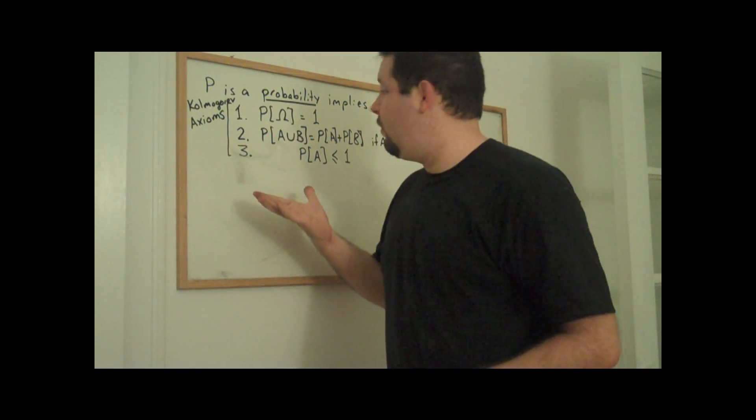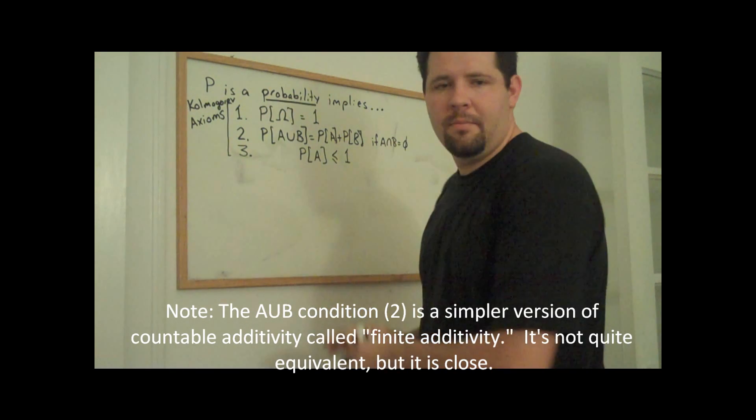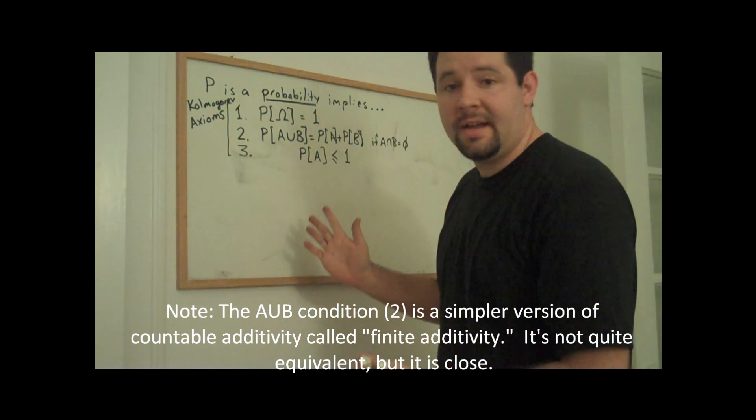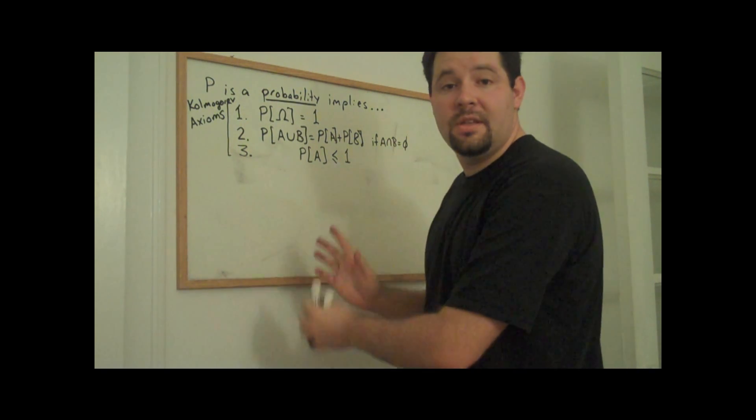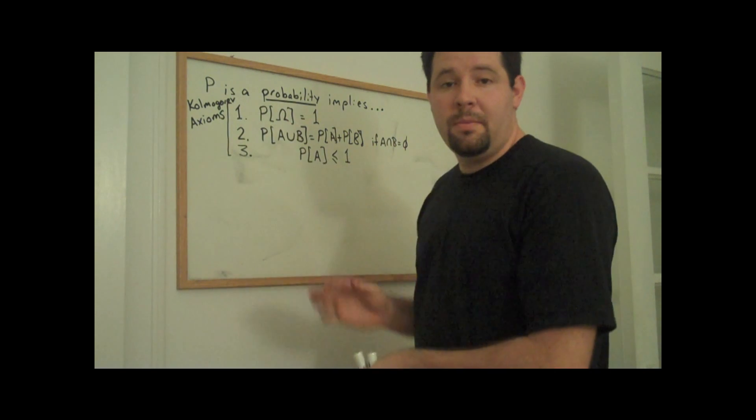For some additional clarity, I wrote these three conditions for being a probability up at the top of the board here so we can see them more clearly. And I labeled them as the Kolmogorov axioms. These are three axioms that are necessary and sufficient for P to be a probability.